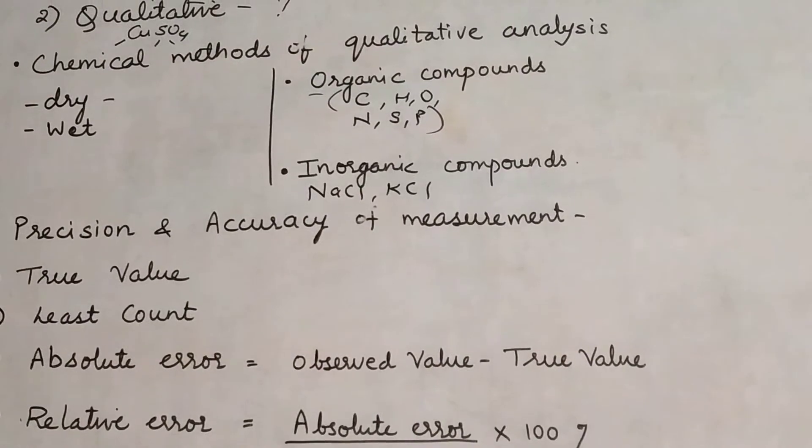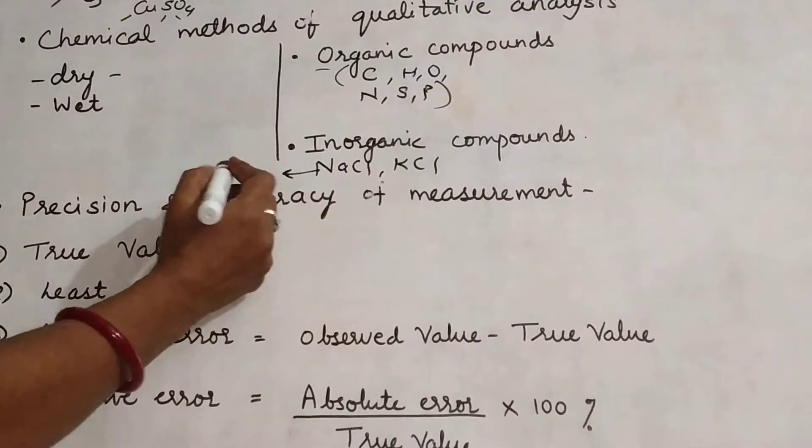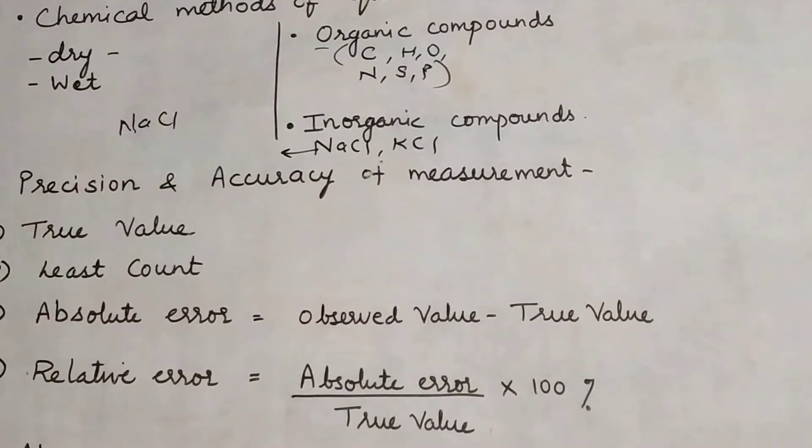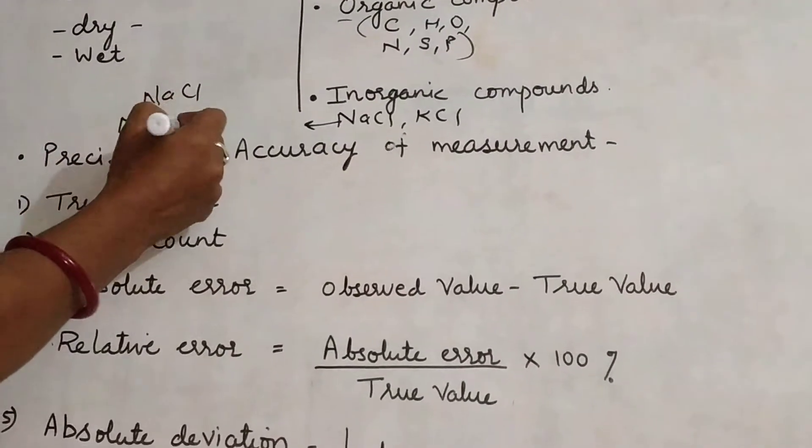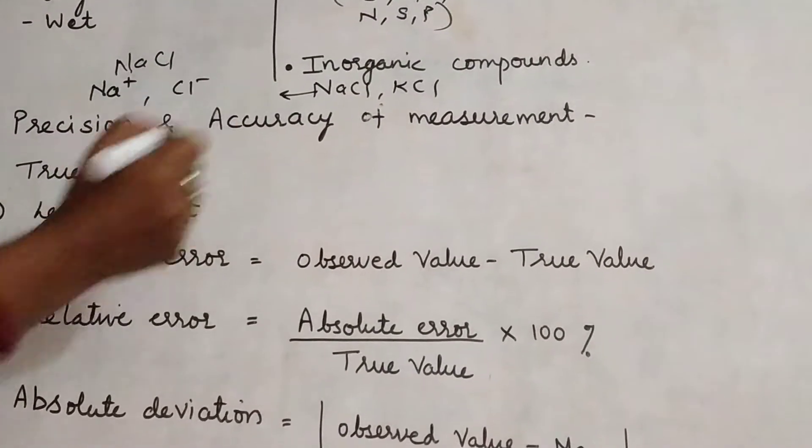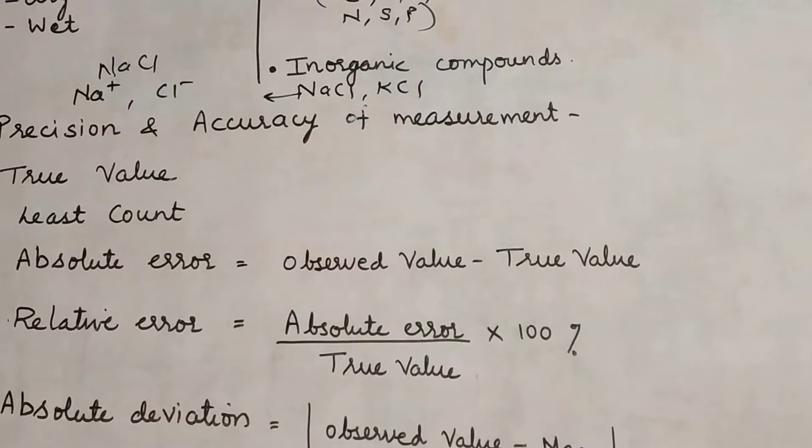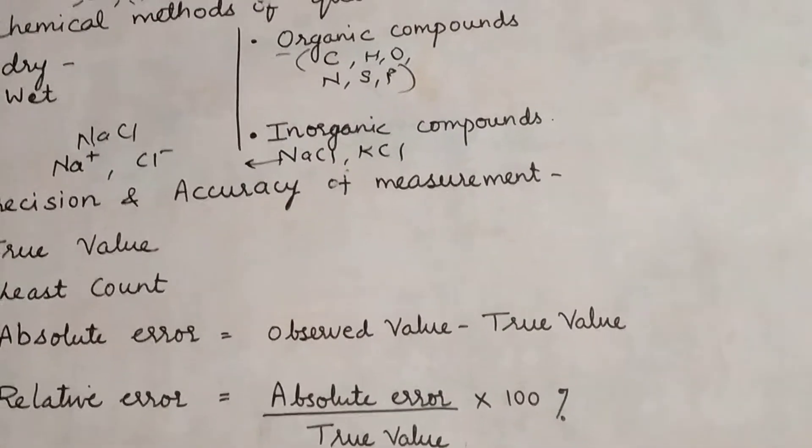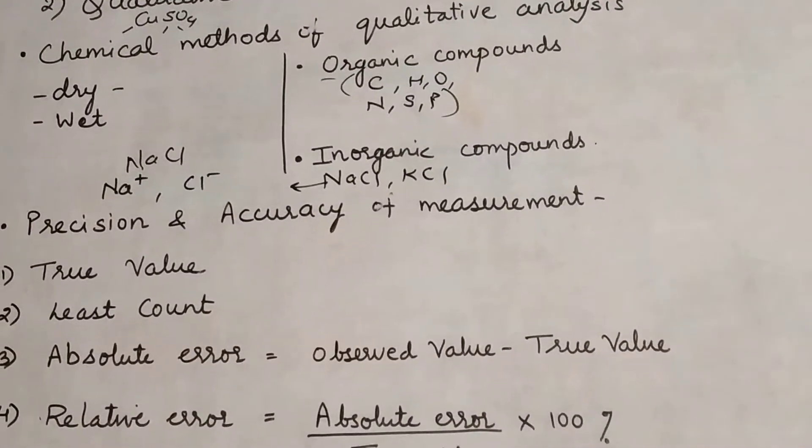For inorganic compounds, when we do qualitative analysis, what do we find? In inorganic compounds we find out the anion and cation. For example, NaCl is an inorganic compound. Which cation is present? Na+. And the anion is Cl-. So we find out the anion and cation in case of inorganic compounds during qualitative analysis.